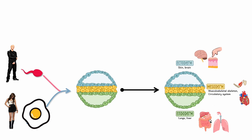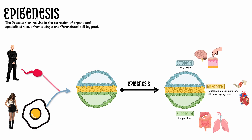What is this process called when we form all of these specialized organs from a single zygote? We call this epigenesis. Epigenesis is the process that results in the formation of organs and specialized tissue from a single undifferentiated cell — the zygote, the very first cell.